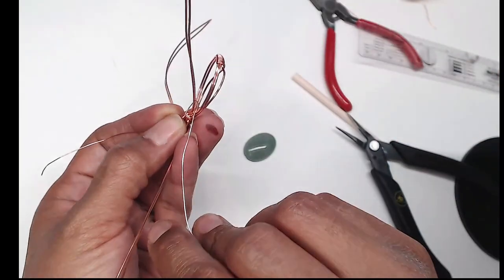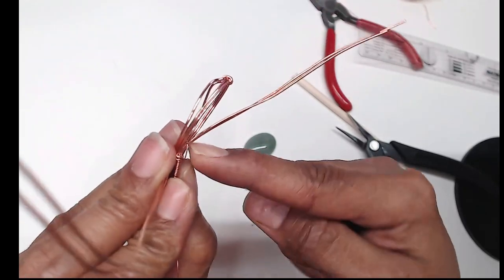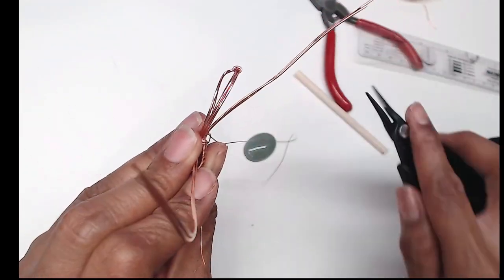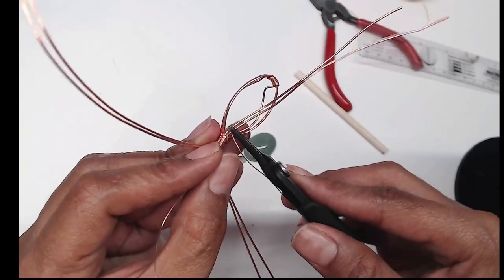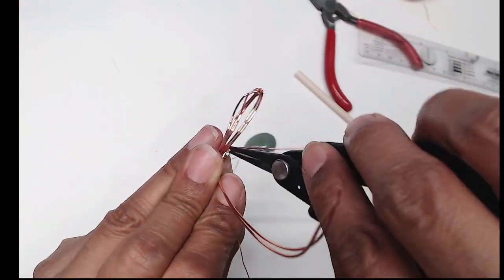When you have at least three, four or five loops connecting the bail all together, you want to then wrap that 26 gauge wire right around these back two bail wires and only these back two bail wires. This will help lock the bail into place.